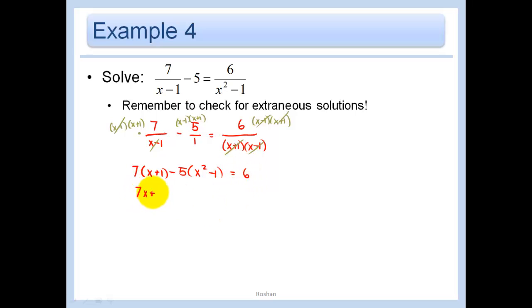So I distribute the 7, and I distribute the negative 5. Scoot everything over to the right, so I get a positive with the x squared. I like to always keep that x squared term positive. 5x squared minus 7x minus 6. Factor: 5x and x. Let's see, we need a 3 and a 2. That gives us a 10 and a 3, so that'll work. Minus 10 plus 3. So we have 5x plus 3 equals 0, and we have x minus 2 equals 0. We get x equals negative 3/5, or x equals 2.